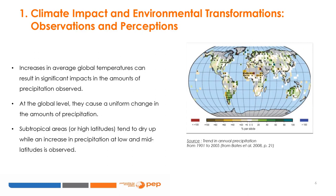At the global level, increases in temperature can cause a uniform change in the amounts of precipitation. Subtropical areas, or high latitudes, tend to dry up, while an increase in precipitation at low and mid-latitudes is observed.